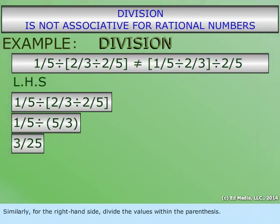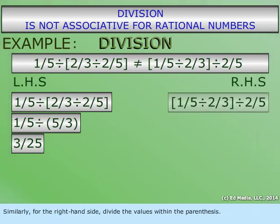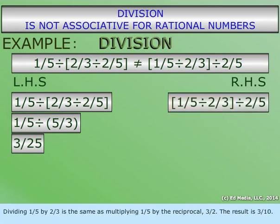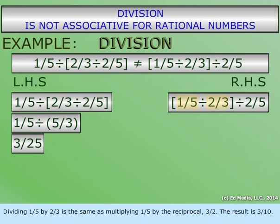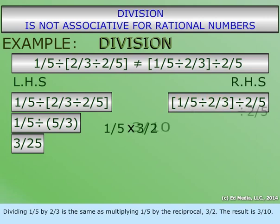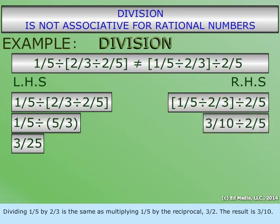Similarly, for the right-hand side, divide the values within the parentheses. Dividing one-fifth by two-thirds is the same as multiplying one-fifth by the reciprocal three-halves. The result is three-tenths.